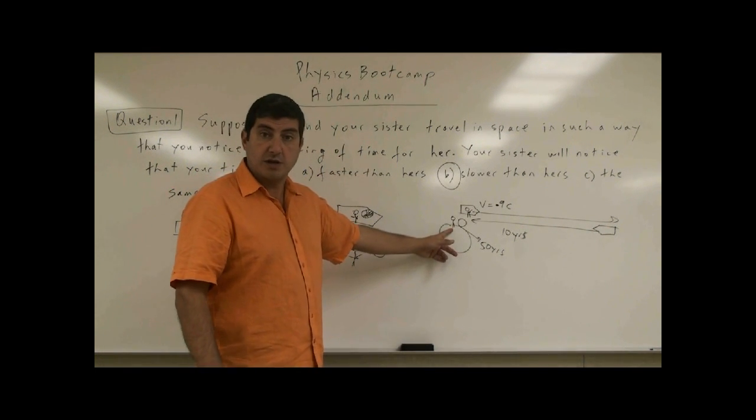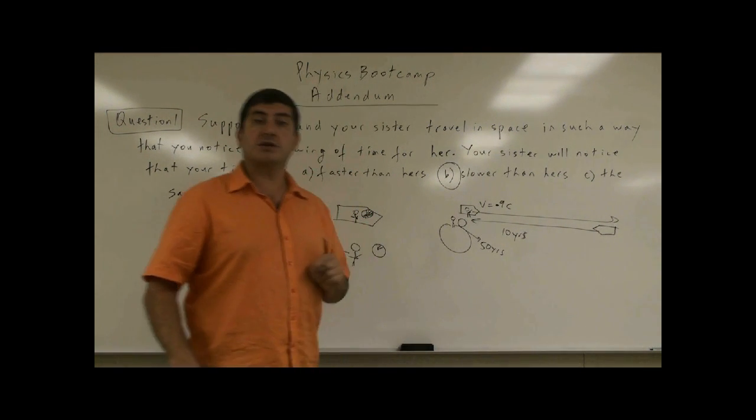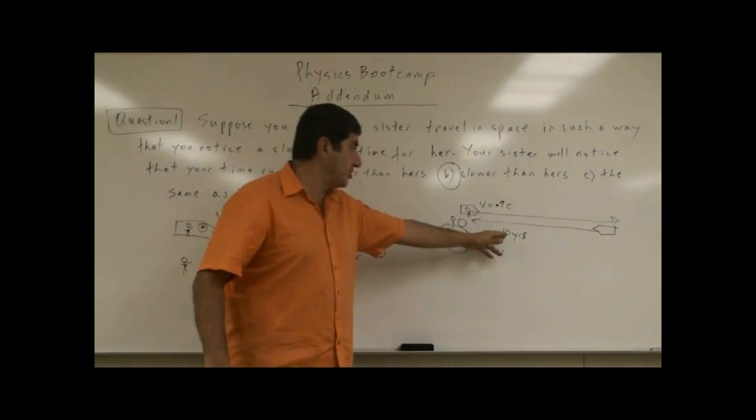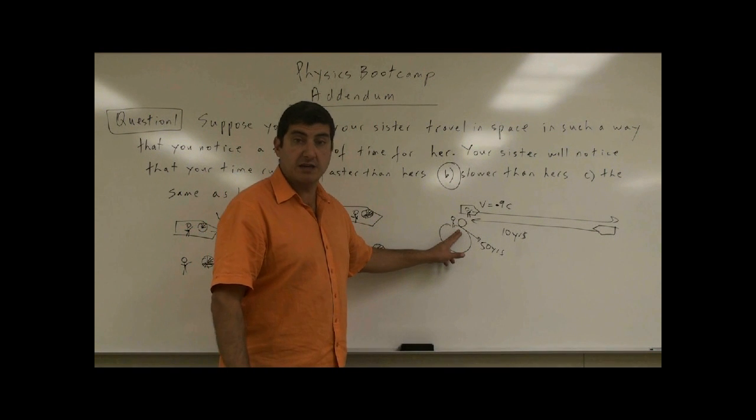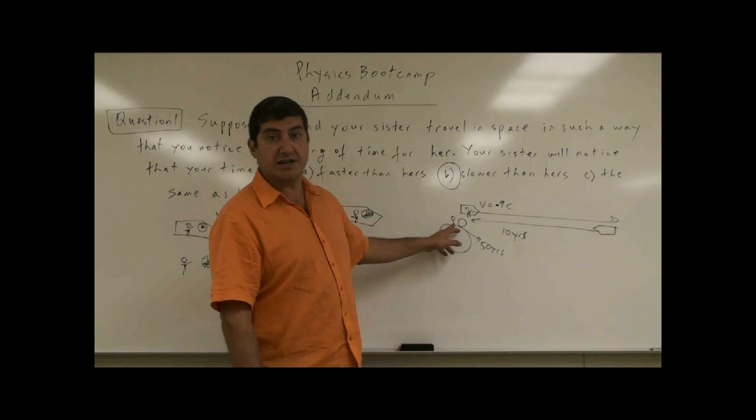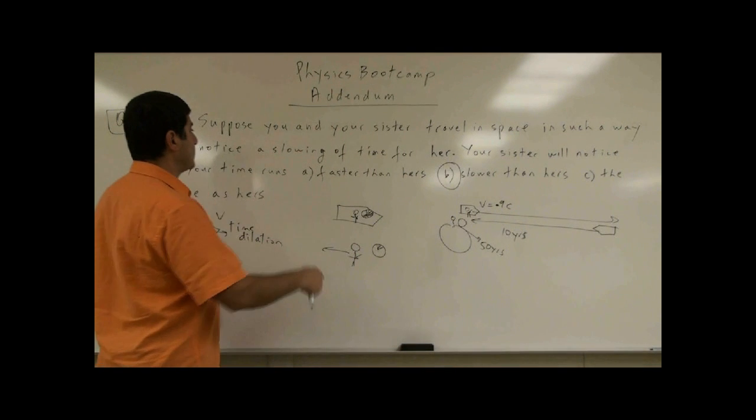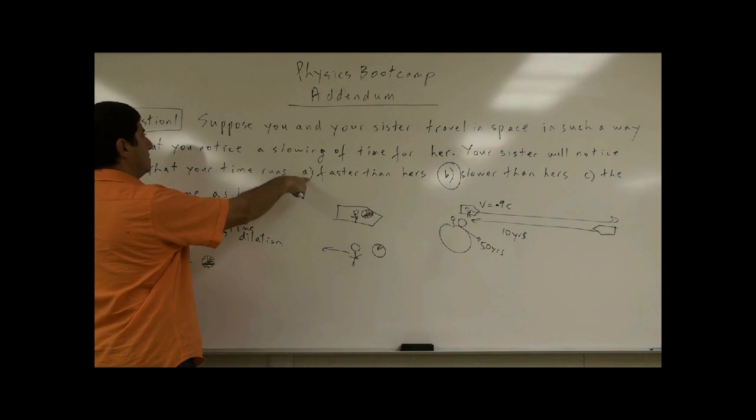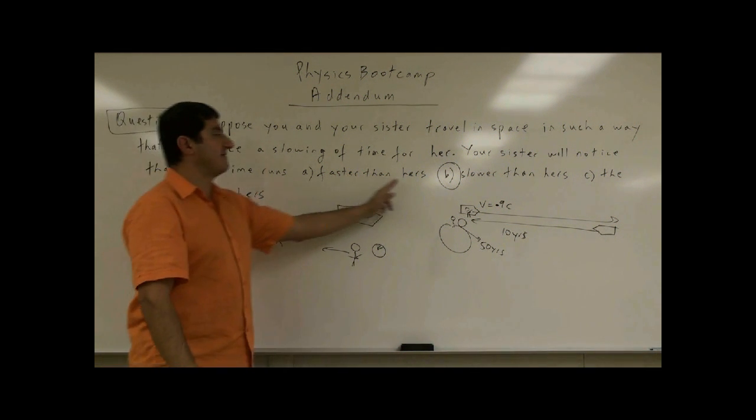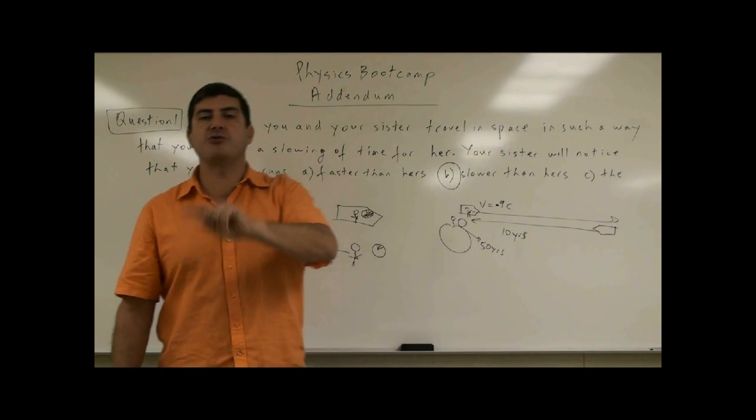So if that's the case, don't they both agree that her clock is running slower because she has aged only 10 years? People are going to say, yes, they do both agree that her clock runs slower. And therefore, his clock, the brother's clock, is running faster. So people who think that would have put A here. Suppose you and your sister travel in space. They would have put, she is going to think your clock is running faster than hers because of this twin paradox. The answer is that no.